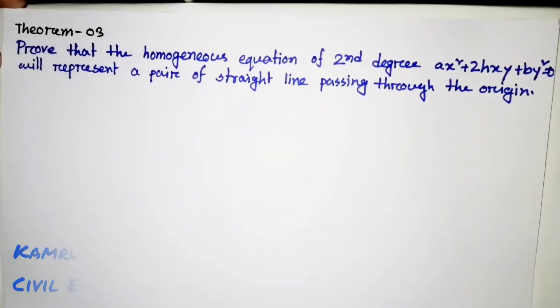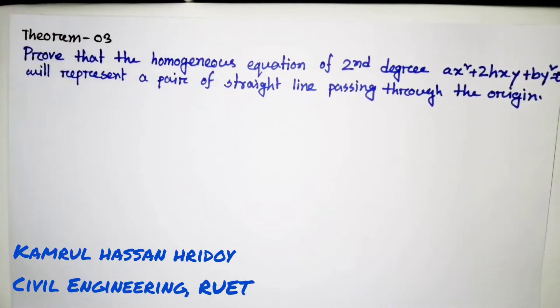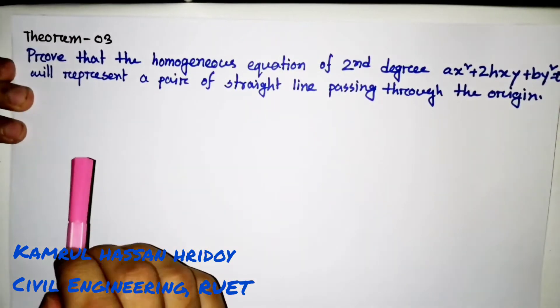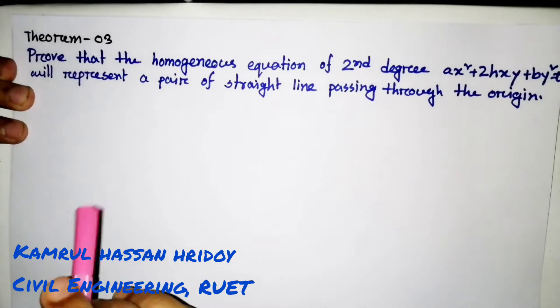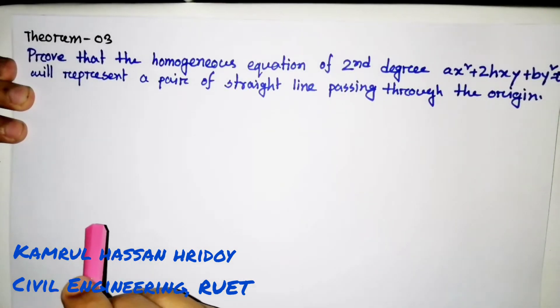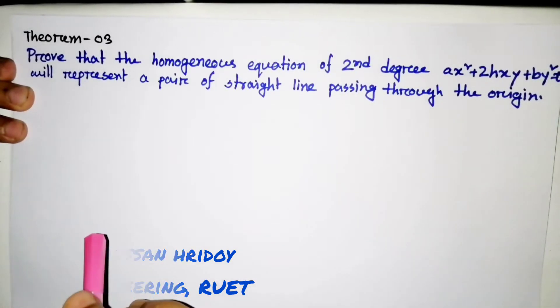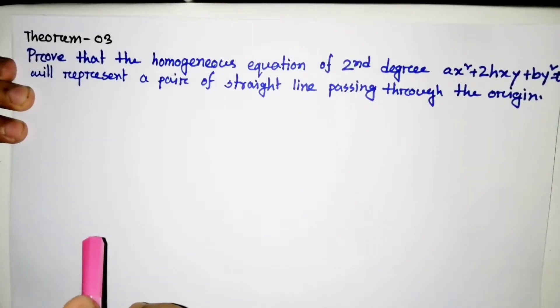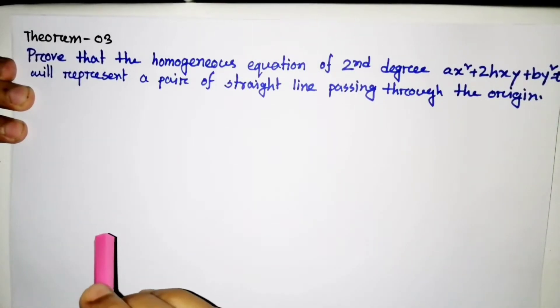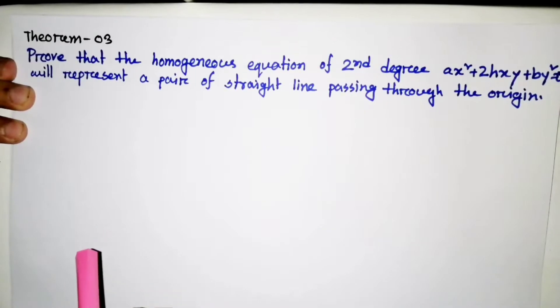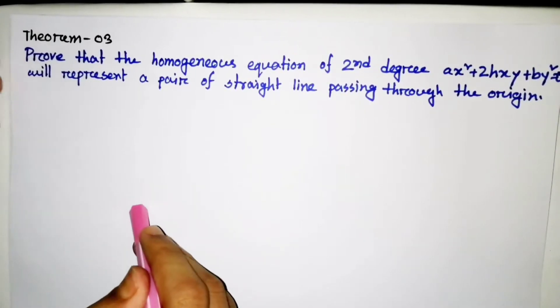Theorem 3: We will prove that the homogeneous equation of second degree ax² + 2hxy + by² = 0 will represent a pair of straight lines passing through the origin.